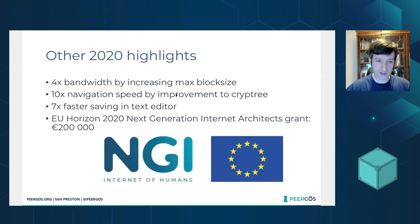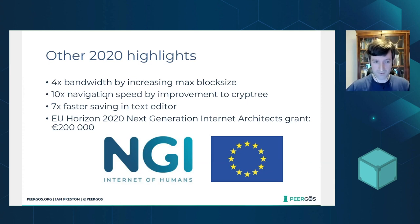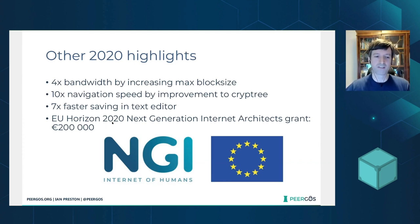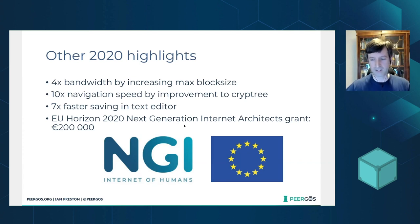There was plenty more in 2020: we increased the bandwidth of uploads and downloads by about 4x, mainly by increasing the maximum block size. We sped up navigating your file system by about 10x through an improvement to Cryptree, and made saving text files seven times faster. But by far the biggest highlight for us in 2020 was being awarded a Horizon 2020 Next Generation Internet Architects grant to extend our decentralized social media capabilities.